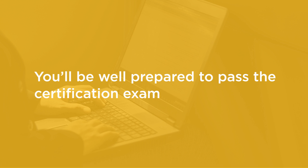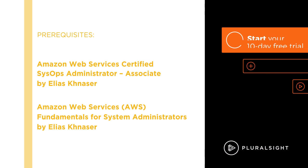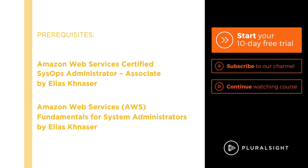However, before beginning this course, you should have a solid working knowledge of AWS. A great first step to acquiring this knowledge is to complete the other AWS courses offered on Pluralsight, namely Amazon Web Services Certified SysOps Administrator Associate and Amazon Web Services AWS Fundamentals for System Administrators. I hope you'll join me on this journey to learn how to design advanced AWS environments with the AWS Certified Solutions Architect Professional course at Pluralsight. Thank you.